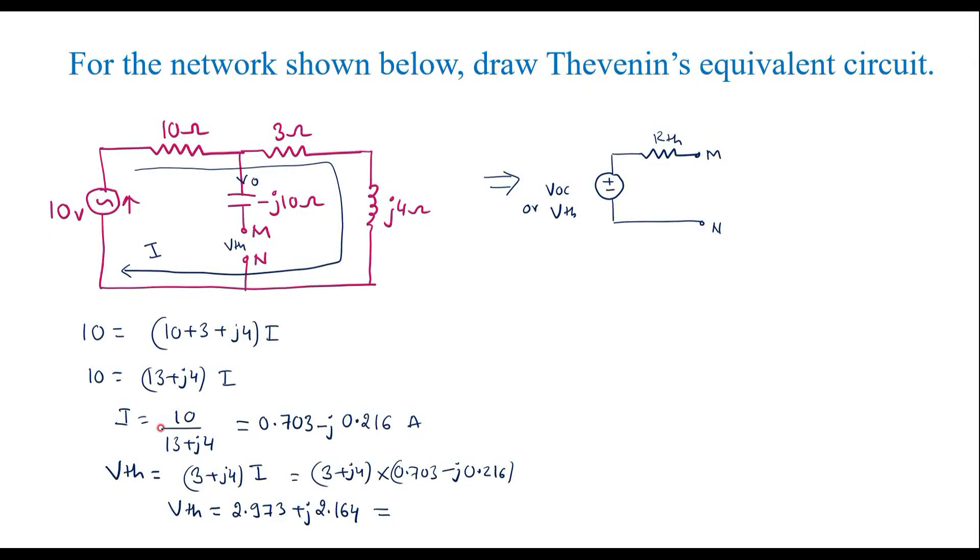And in polar form we will get as 3.677 at an angle of 36 degrees. This is the required VTH value. Now let us calculate RTH.